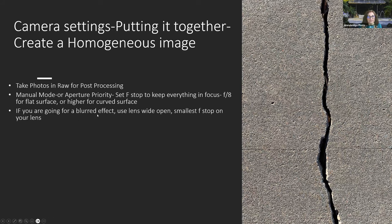If you're going for a blurred effect of your texture, you want your lens wide open — the smallest F-stop on your lens. I have lenses that go down to F4 or F2.8.